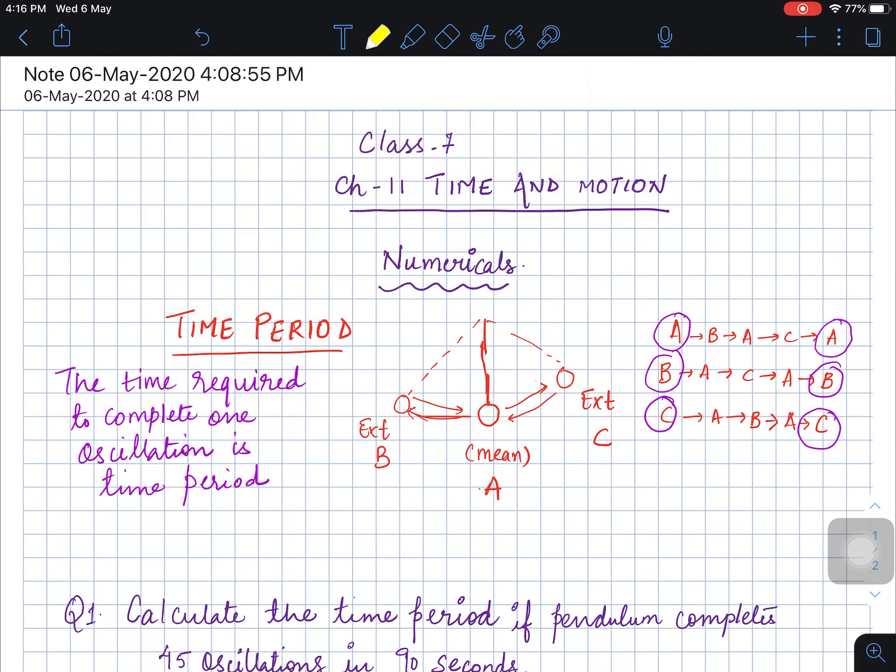Now, the formula: time period equals time taken upon number of oscillations.